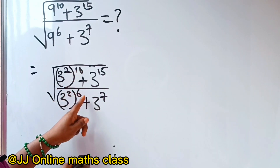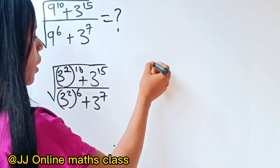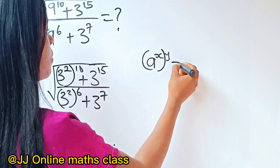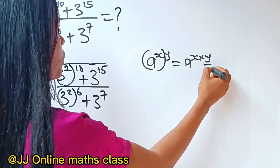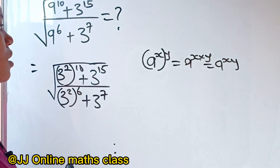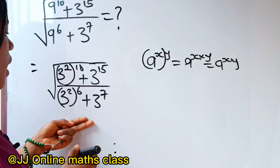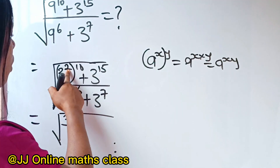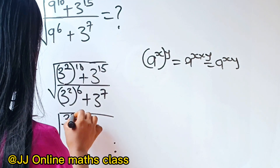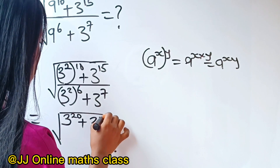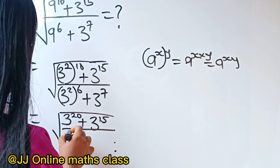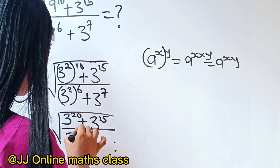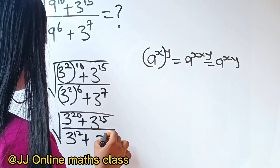Let's multiply this out first of all, because we know that a to the power of x, to the power of y, is the same as a to the power of x times y, which gives us a to the power of xy. So we can write this as square root of 3 to the power of 2 times 10, which gives us 20, plus 3 to the power of 15, divided by 3 to the power of 2 times 6, which gives us 12, plus 3 to the power of 7.